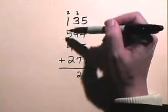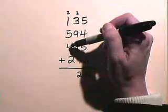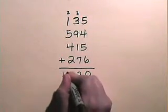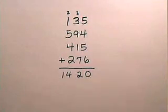2 plus 1 is 3, plus 5 is 8, plus 4 is 12, plus 2 is 14. So we have a result of 1,420.